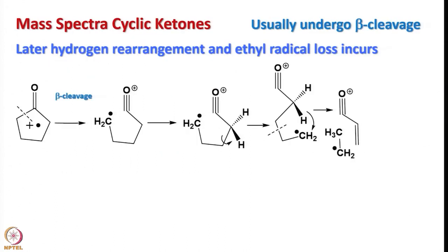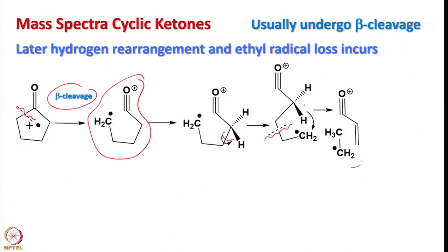Now let us look at the mass spectra of cyclic ketones. Cyclic ketones usually undergo beta cleavage. Later, hydrogen rearrangement and ethyl radical loss can also happen, but initially beta cleavage occurs. That means cleavage takes place to give a species of this type, and then hydrogen rearrangement happens. Then cleavage can happen again to give an ethyl radical and a remaining species. These are the major fragments one can anticipate in the mass spectra of cyclic ketones.